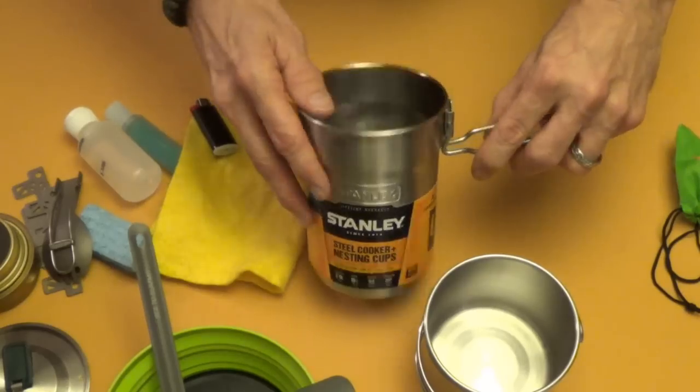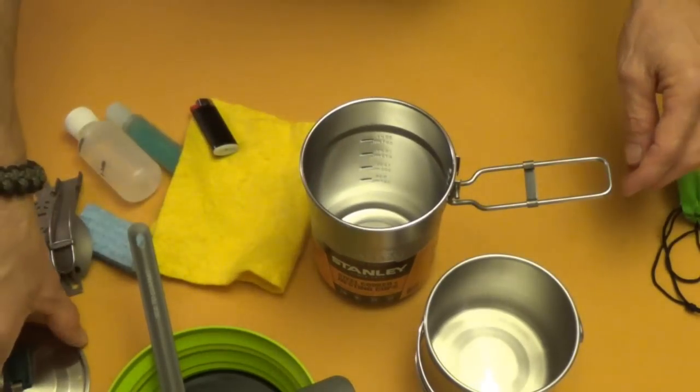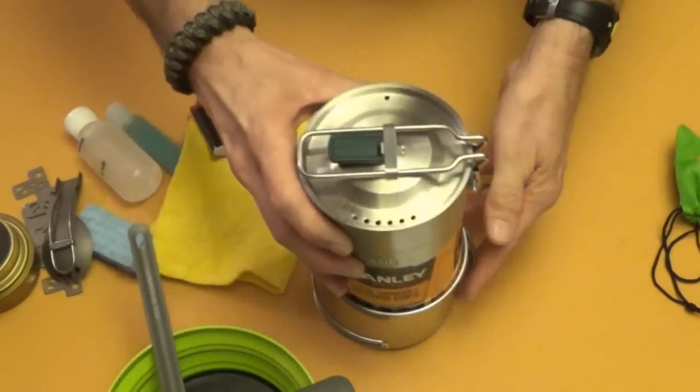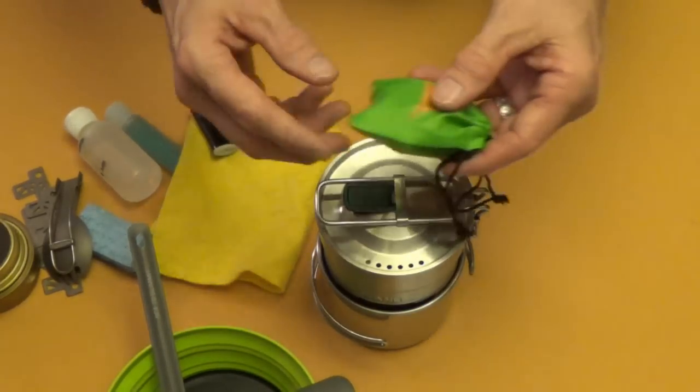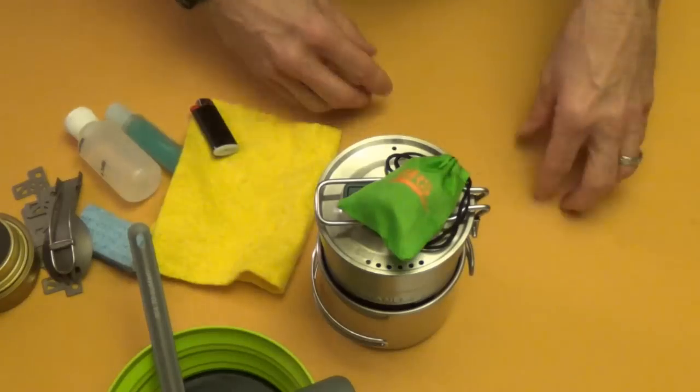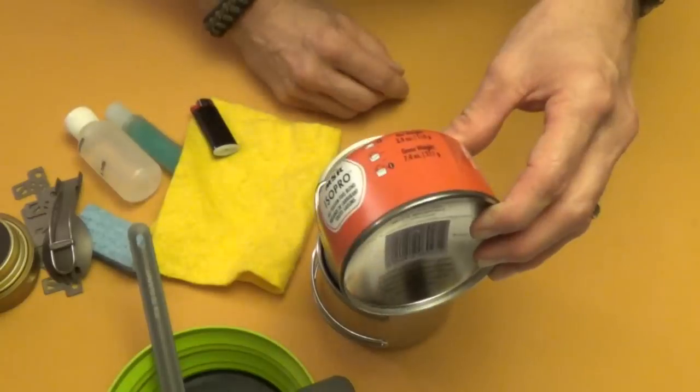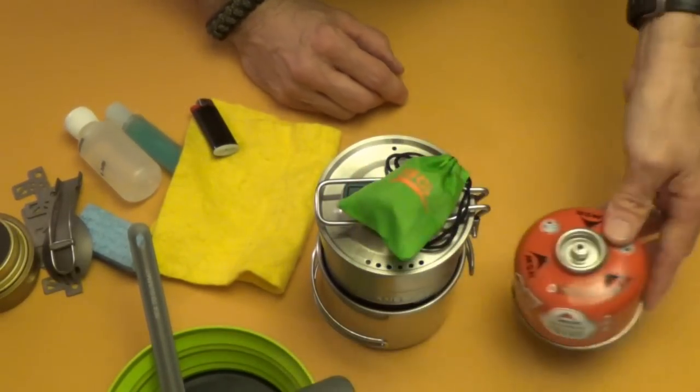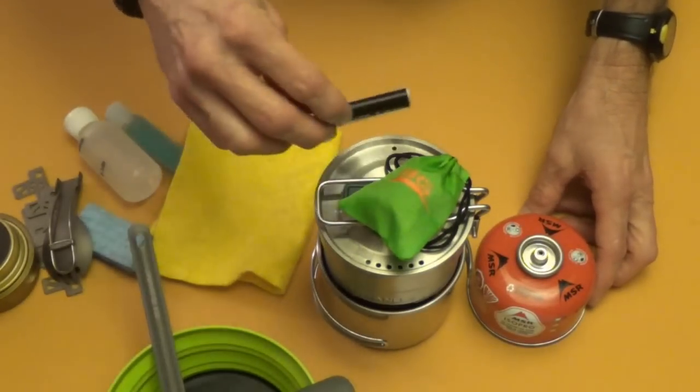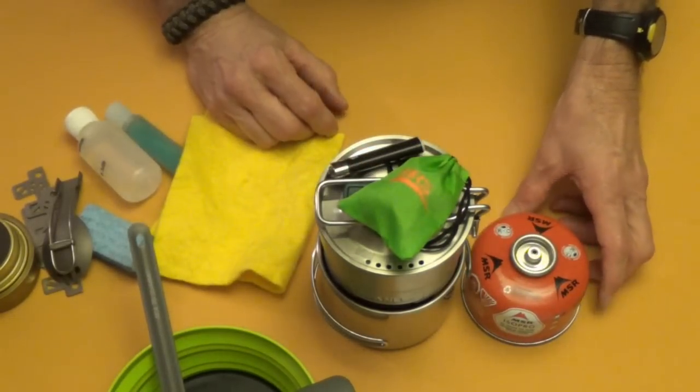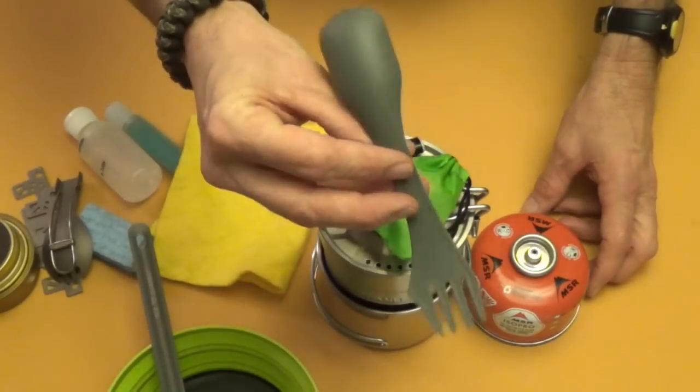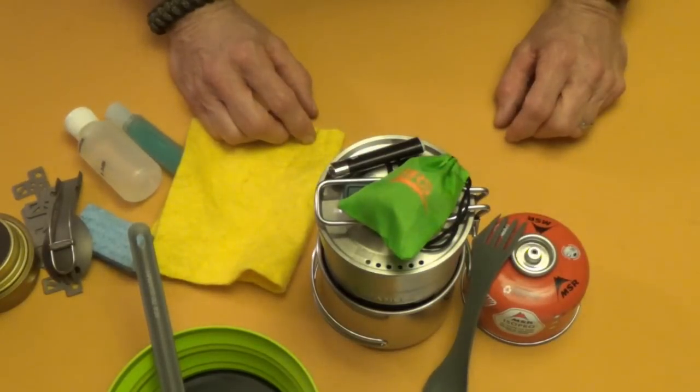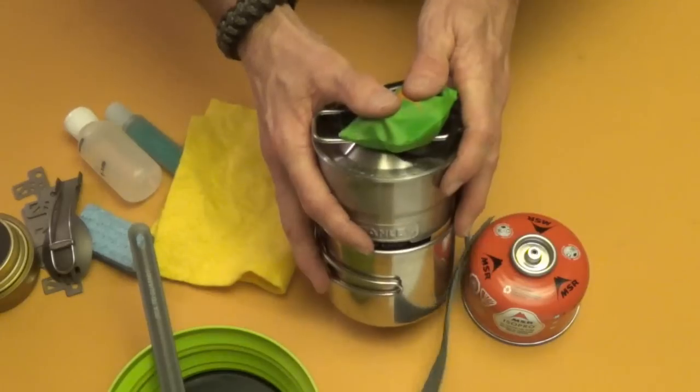So, let's add that up. We're talking about 15 bucks for this. Another five for that. Makes it 20. Another 14 here. Makes it 34. Another four bucks here. Let's just say five. Makes it 39. Your Mini Bic. Makes it 40. Spork from Academy. Dollar. So, 41 bucks. You got your complete cook kit.